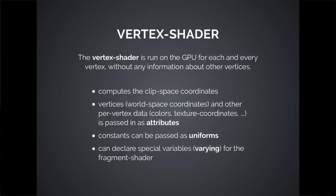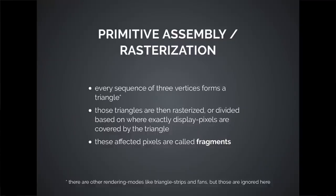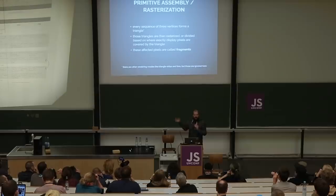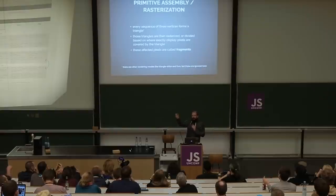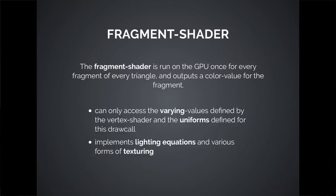In WebGL, we have vertex data coming in through vertex buffer objects — called attributes — which run into the vertex shader. The vertex shader computes the clip space coordinates. It receives vertices as attributes, plus additional data called uniforms, and can write output data as varying variables passed on to the next stage. The primitive assembly takes these computed vertex values in clip space, assembles the triangles, rasterizes them, and finds out where each screen pixel corresponds to a pixel in the triangle. The fragment shader can only access data passed by the vertex shader.